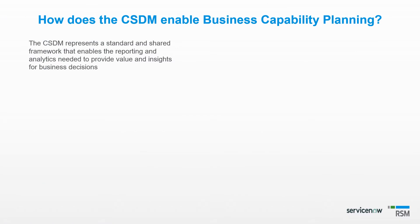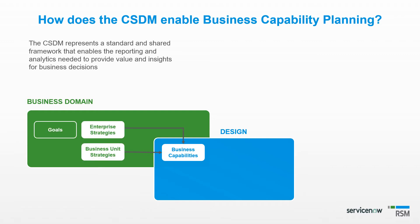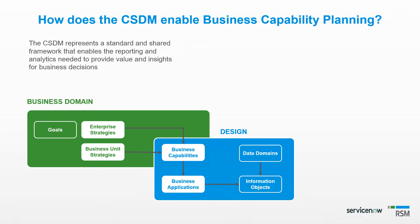How can ServiceNow's Common Services Data Model help in business capability planning? The Common Services Data Model represents a standard and shared framework that enables the reporting and analytics needed to provide value and insights for business decisions. The business capability is represented in both the business domain and design domain. In the green box, we can see some business domain components such as strategies, goals, and business capabilities. In the blue box, the design domain is where we link the supporting business applications to business capabilities.